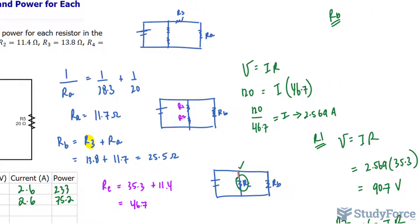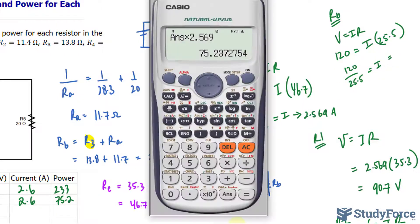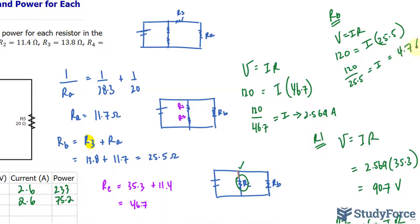Looking back at what we did in part 1, we found that the resistance of RB is 25.5. So V equals IR, the voltage is 120, the resistance is 25.5 multiplied to I. Dividing both sides by 25.5, we get our current: 120 divided by 25.5 makes a current of 4.7 amperes.